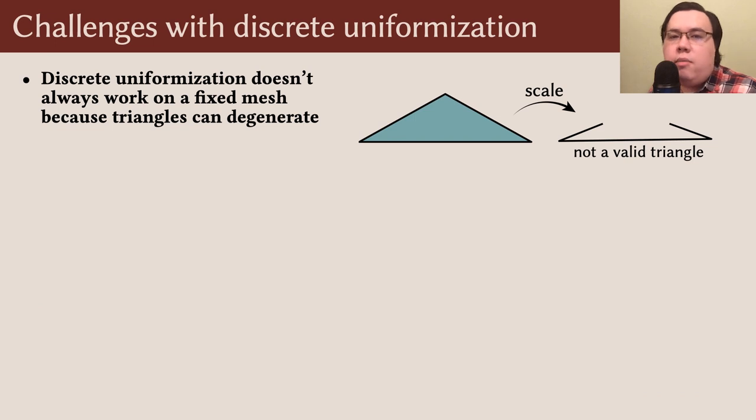However, there's a big problem. This algorithm doesn't always work on a fixed mesh. The reason is that triangles can degenerate. If you make one edge of a triangle too long, then the other edges can't reach each other anymore and these lengths don't define a valid triangle at all. In his original paper, Luo suggested handling this issue by flipping an edge at the moment when a triangle degenerates.